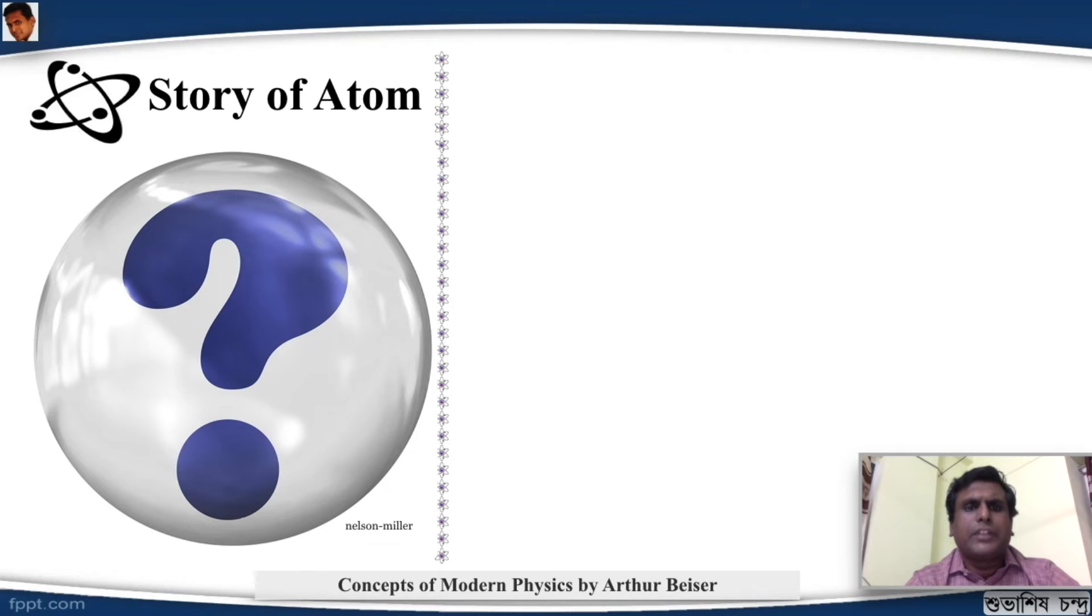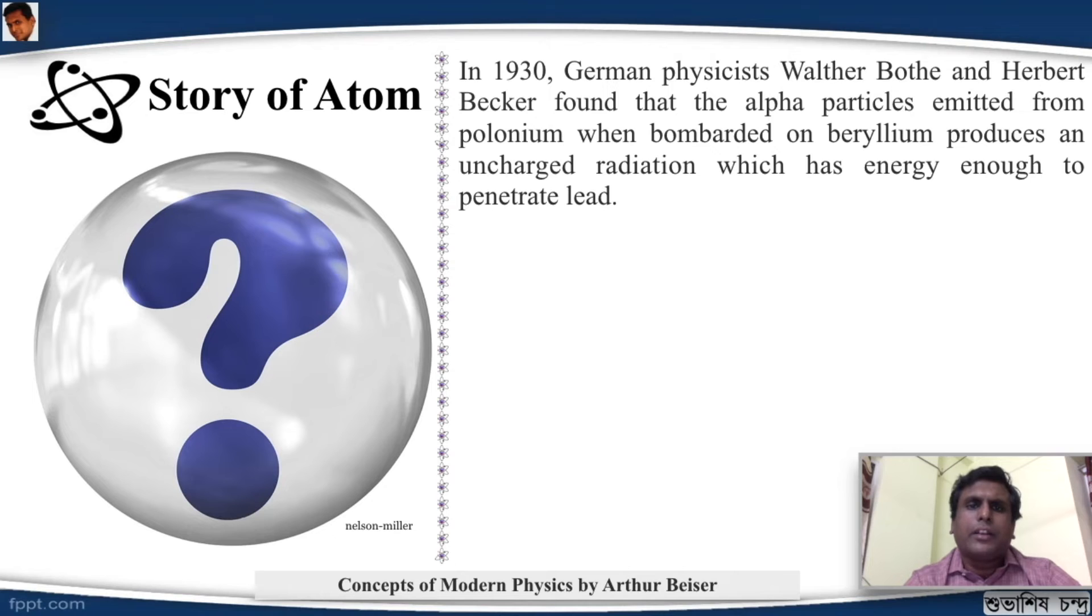Now, the atom, it seemed that it was complete. It had a positive charge, it had a negative charge. We know where the negative charge was, we know where the positive charge was. But there were few other experiments that were going on with the atom. And they were not consistent with the atomic model. The atomic model was not able to justify these answers. In 1930, German physicist Walter Bothe and Herbert Becker found that the alpha particles emitted from polonium, when bombarded on beryllium, produces an uncharged radiation which has energy enough to penetrate lead. This couldn't be explained using the existing atomic model.